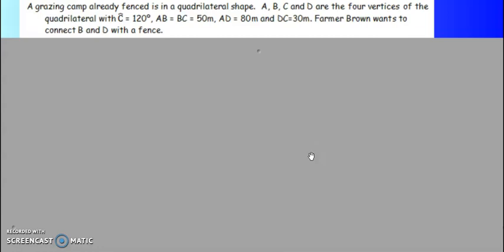Now this very same question they can ask as follows and it will mean exactly the same: a grazing camp is in a quadrilateral shape. Stating that it is a camp means it is already cordoned off with fence. They don't have to say it is already fenced, they can say a grazing camp meaning it is already encamped.